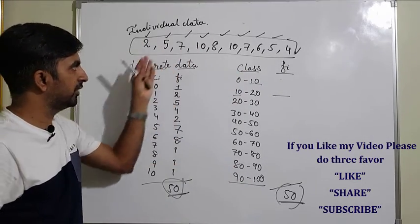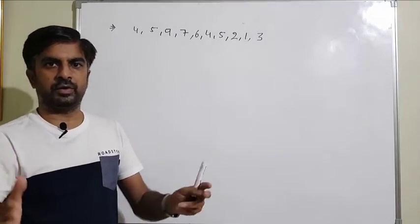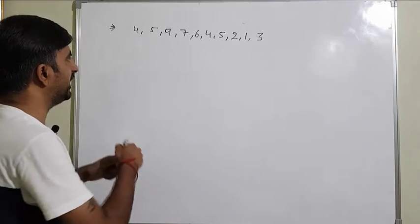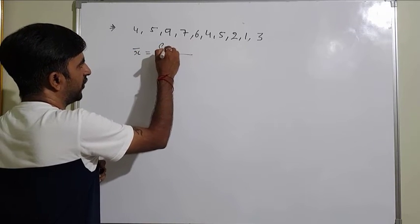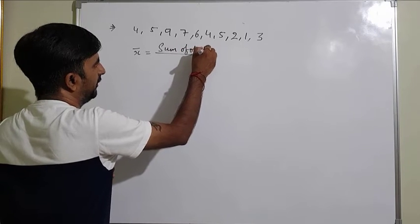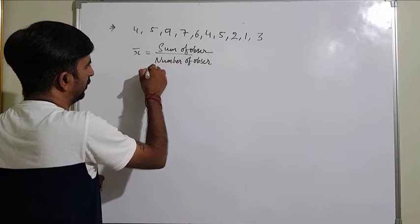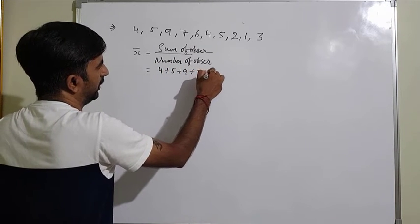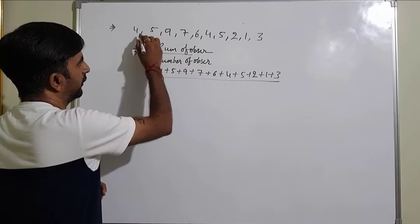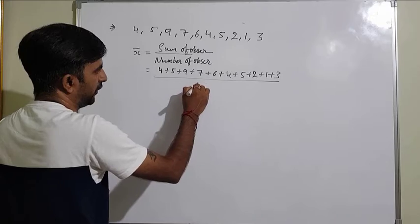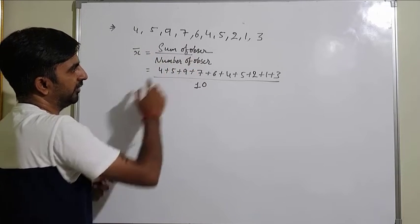In all three different arrangements, we need to find out mean, median and mode. One by one, I am going to tell you how. First, I am going to find out mean from individual data. Mean means average, and the short name for mean is X-bar. Mean equals sum of observations divided by number of observations.